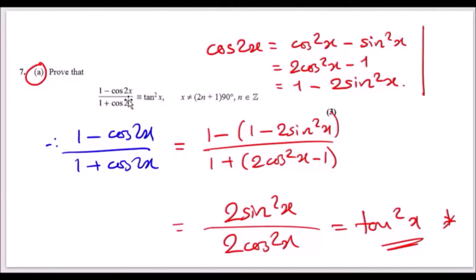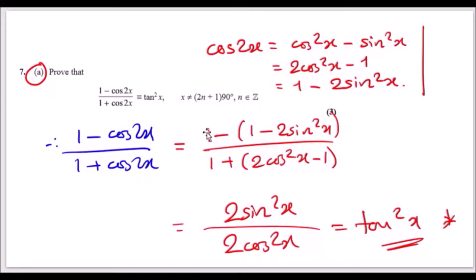Recall the double angle formula: cos 2x equals cos²x minus sin²x, but using sin²x plus cos²x equals 1, you can rewrite it as 2cos²x minus 1 or 1 minus 2sin²x. Since we have cos 2x terms and ones, replacing cos 2x with the third form (1 minus 2sin²x) makes the ones cancel and leaves positive terms. Combined with the fact that sine over cosine is tan, this gives the required result.